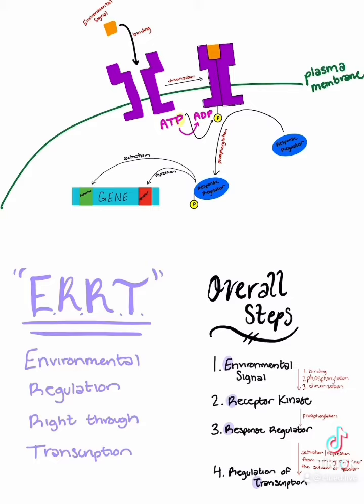Next, the response regulator takes the phosphate from the receptor kinase and can then bind either to an activator or an operator on a gene, controlling transcription.